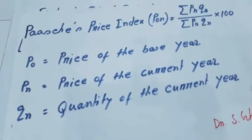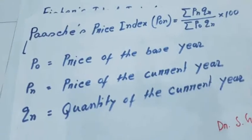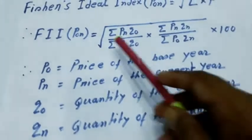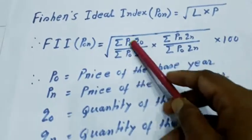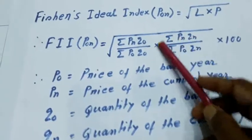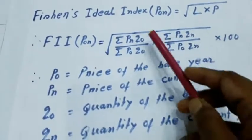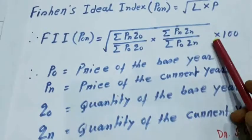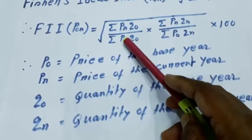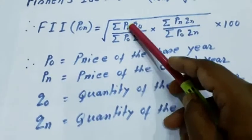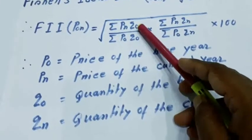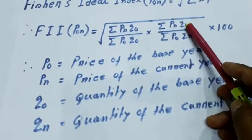Now if we take the square root of the product of both indices, it will combine Laspeyres into 100 and Paasche into 100. The 100 times 100 under the root gives 100. Here, P0 is the price of the base year, Pn is the price of the current year, Q0 is the quantity of the base year, and Qn is the quantity of the current year.